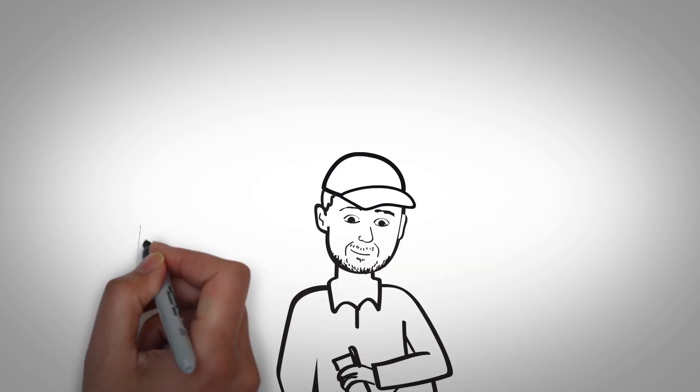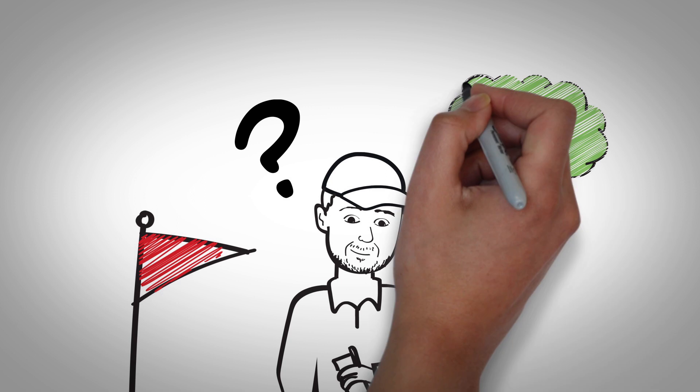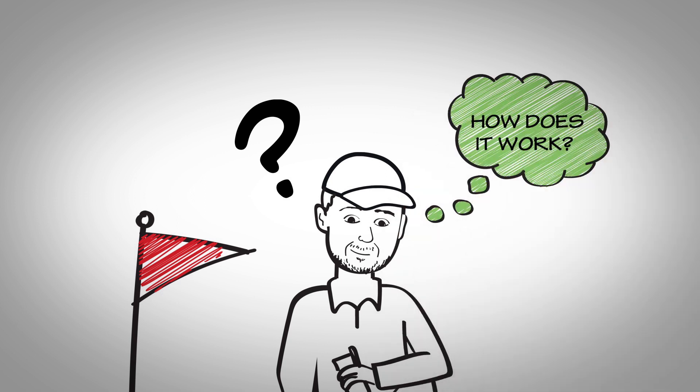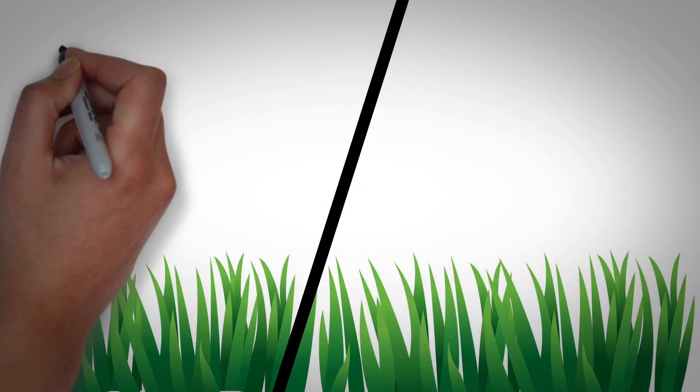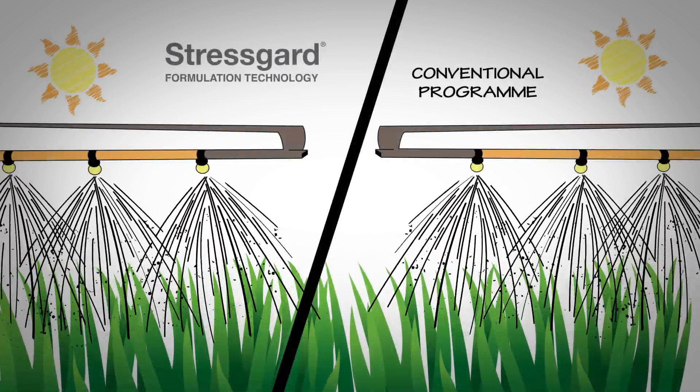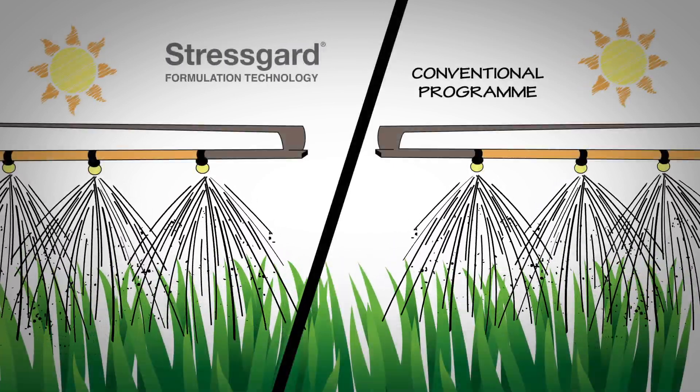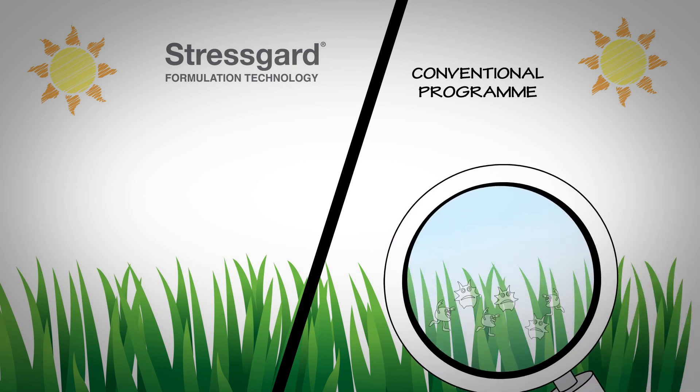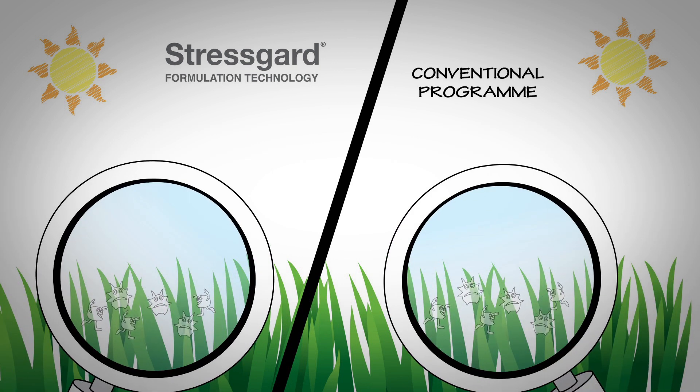So you're probably wondering, how does StressGard work? And what does it mean for your golf course? Fungicides from Bayer contain unique formulated active ingredients that work to prevent disease infections by those pesky pathogens that threaten your turf all year round.